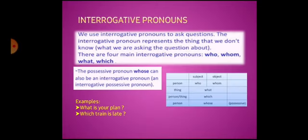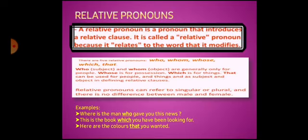Interrogative pronouns. We use interrogative pronouns to ask questions. The interrogative pronoun represents the thing that we don't know. There are four main interrogative pronouns: who, whom, what, which. The possessive pronoun 'whose' can also be an interrogative pronoun. An interrogative pronoun is used to ask a question. For example: 'What is your plan?' 'Which frame is late?'